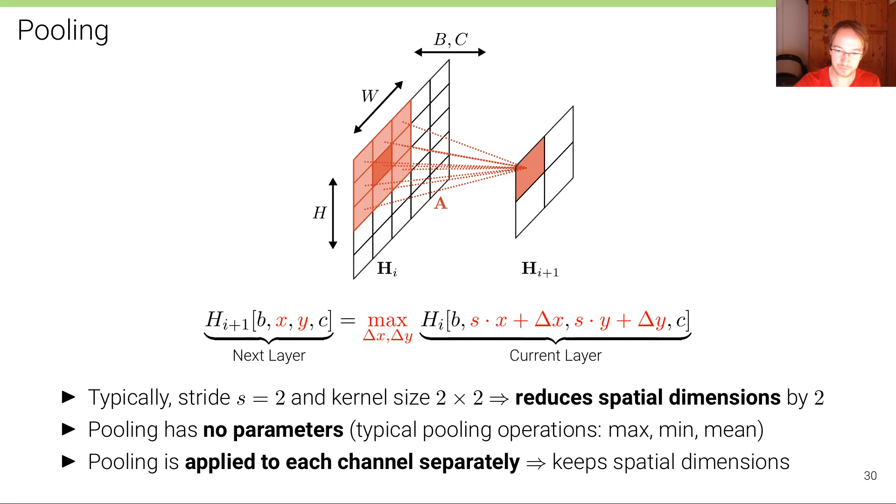One of the simplest and maybe most common downsampling operations is called pooling. There are different variants: maximum pooling, minimum pooling, average or mean pooling, for instance. Pooling has no parameters.